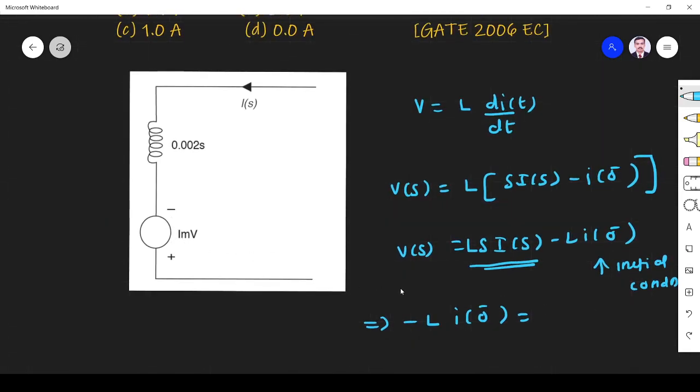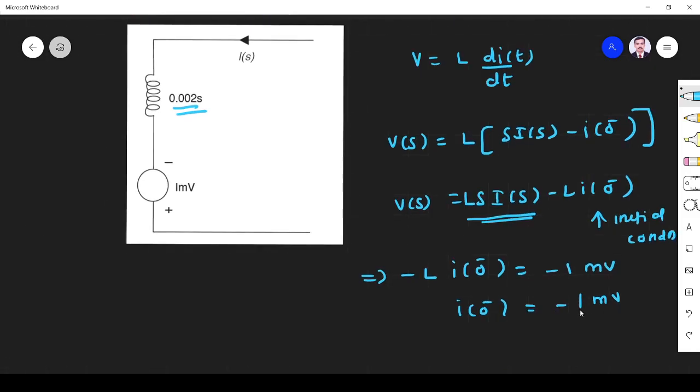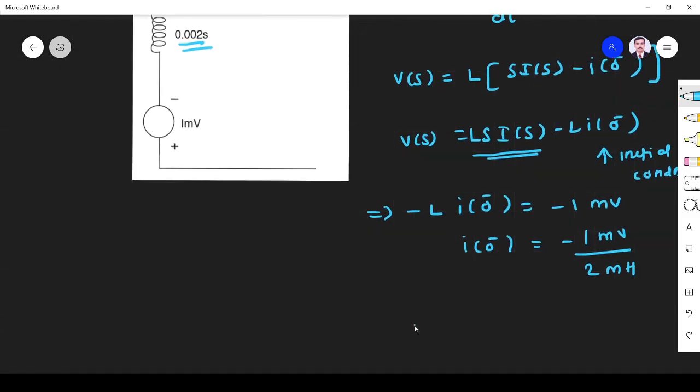It is minus, so minus 1 milli volt. So what is I of 0? Minus 1 milli volt divided by L is 2 milli Henry. So I is equal to minus 0.5 ampere.